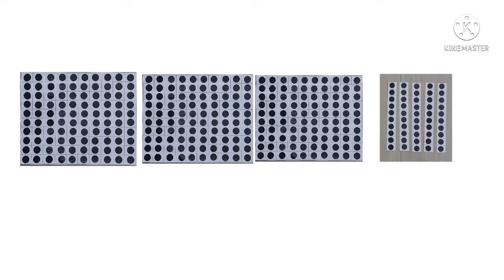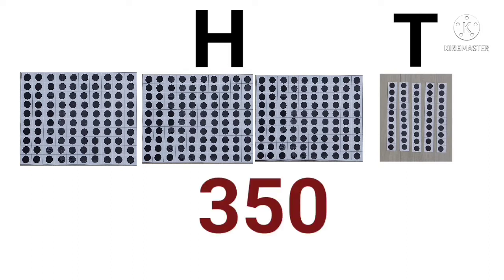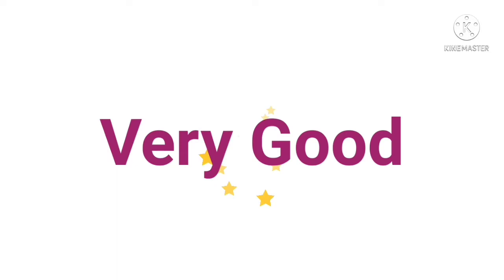Now, see the picture here. There are three hundreds, five tens and there are no ones — means nothing, zero. So three hundreds, five tens and zero ones makes three hundred and fifty. Three five zero — three hundred and fifty. Hope you have guessed the number.